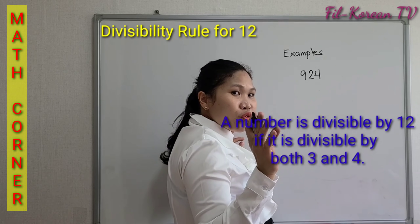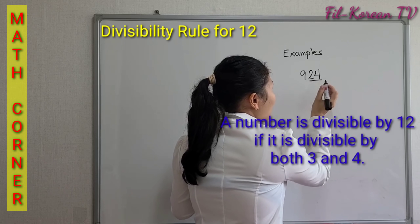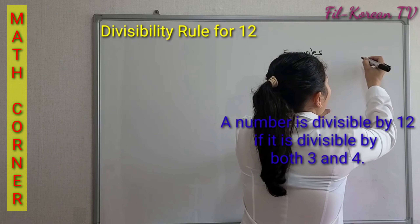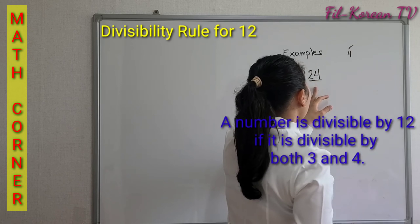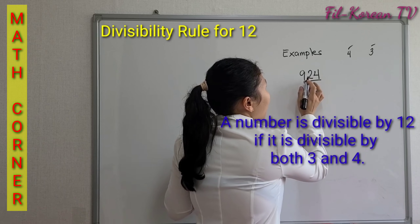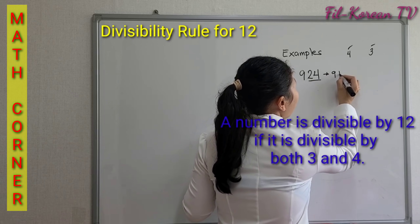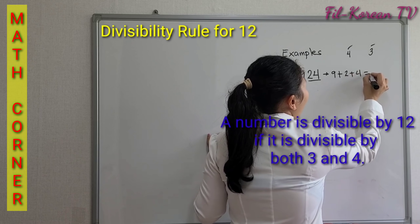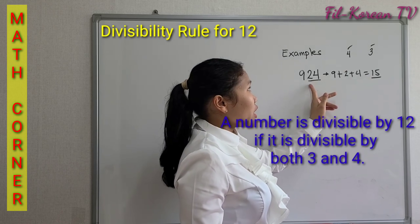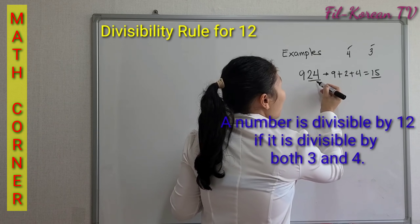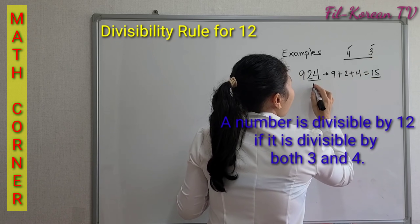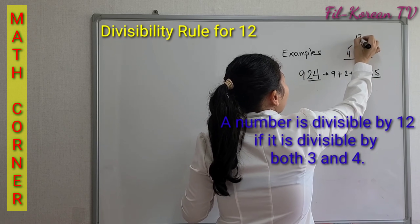Example: 924. The rule for 4 — look at the last two digits: 24, which is divisible by 4. Then for the rule of 3, add the digits: 9 plus 2 plus 4 equals 15. 15 is a multiple of 3, so it is divisible by 3. Since 924 is divisible by both 4 and 3, this number is divisible by 12.